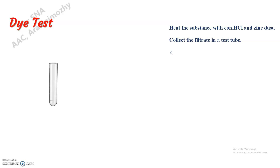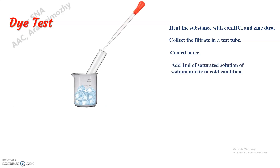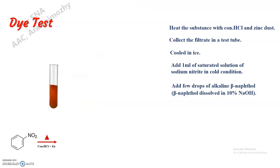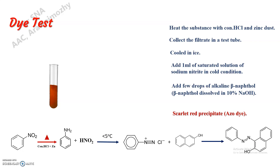Cool the filtrate in ice, then add a saturated solution of sodium nitrite under ice-cold conditions, followed by alkaline beta-naphthol also in ice-cold condition. This produces a brilliant scarlet dye, as the primary amines form this azo dye.